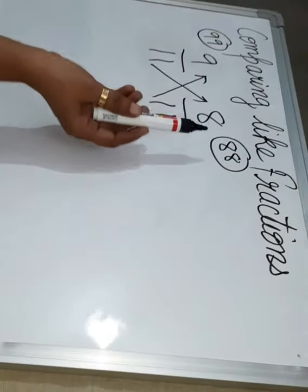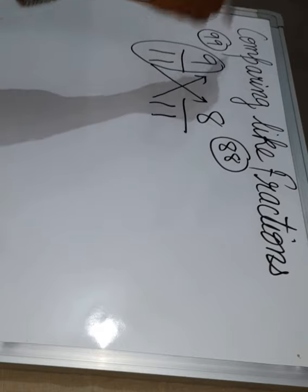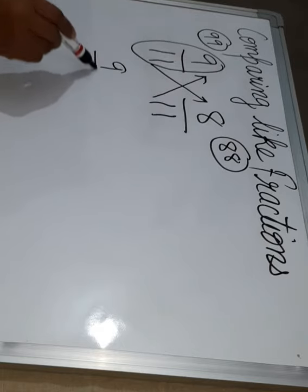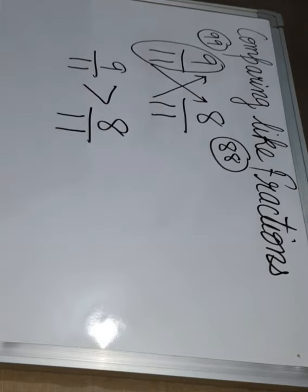Which is bigger? 99 or 88. 99 is bigger. So 9 by 11 is greater than 8 by 11. So what we concluded?